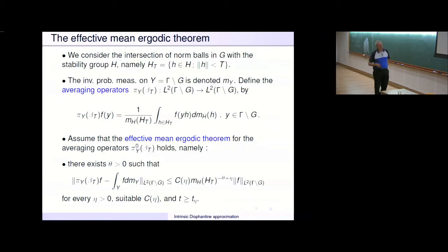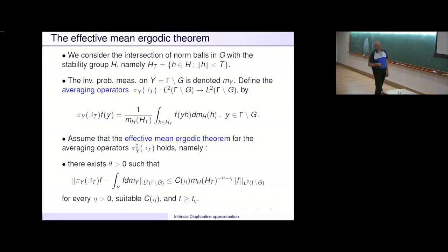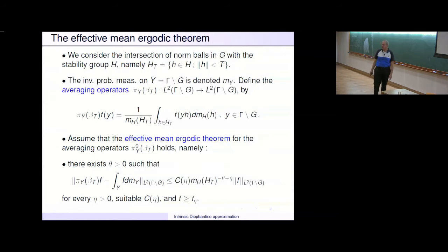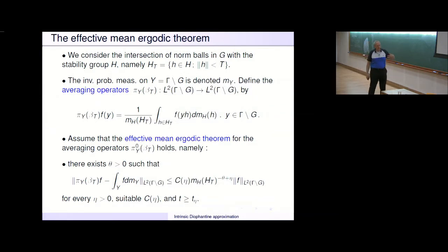The effective mean ergodic theorem is a truly remarkable estimate in ergodic theory because it's an operator norm estimate. It says that the operator norm of these averaging operators decays at a certain rate. This result is uniform on the unit ball of the Hilbert space. This fact drives, in the end, a lot of the argument that we want to use in our computations.